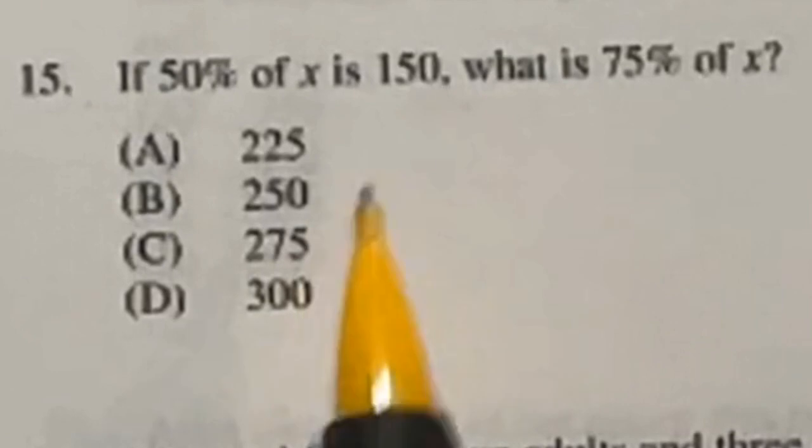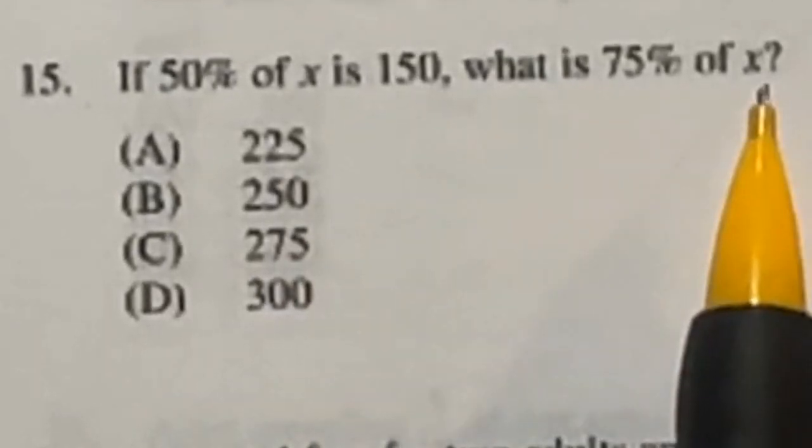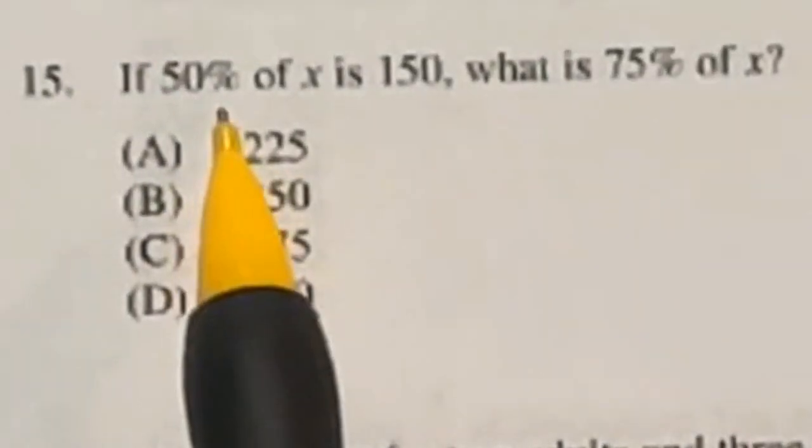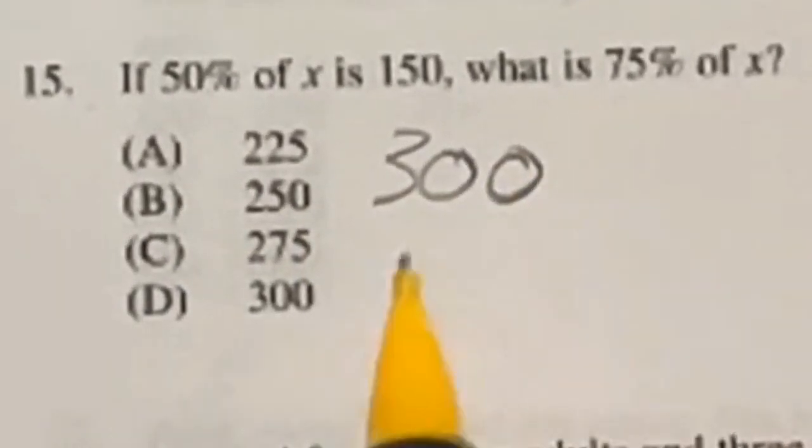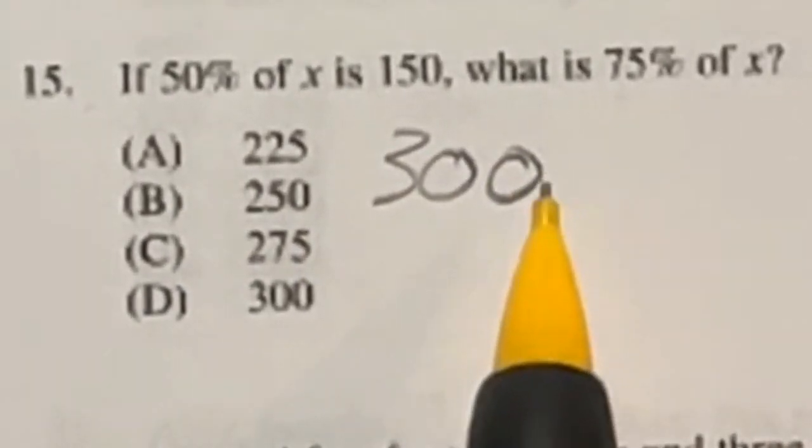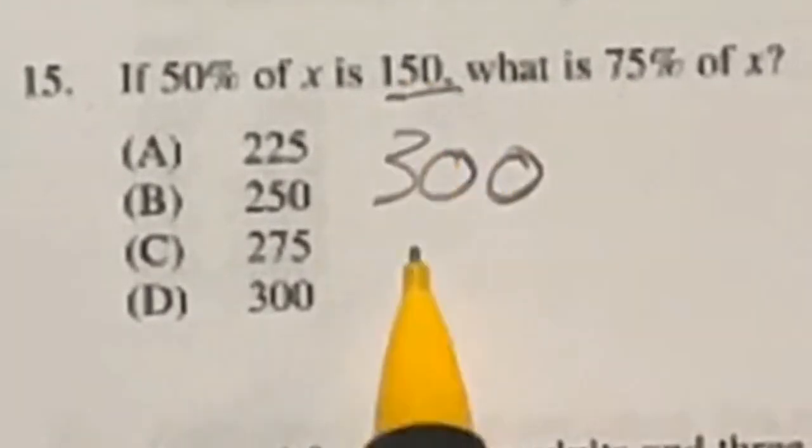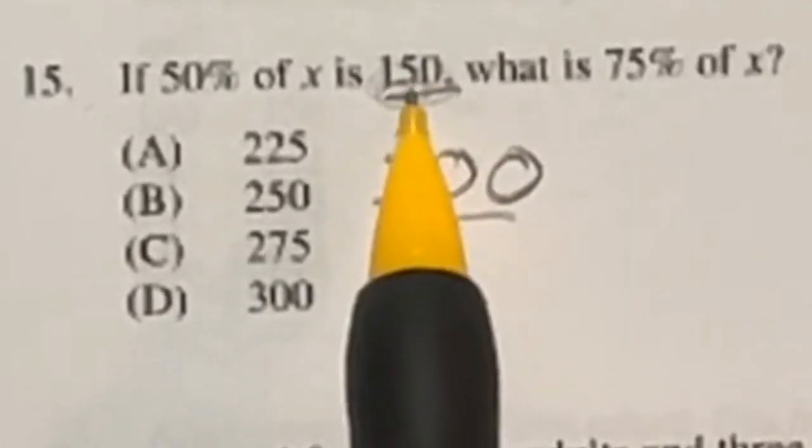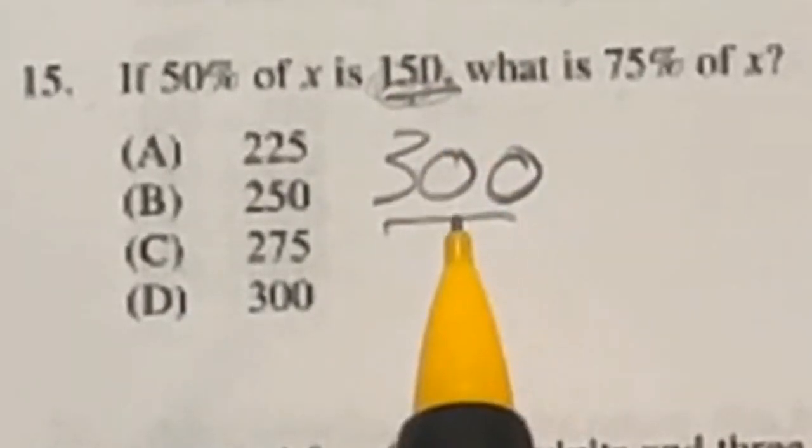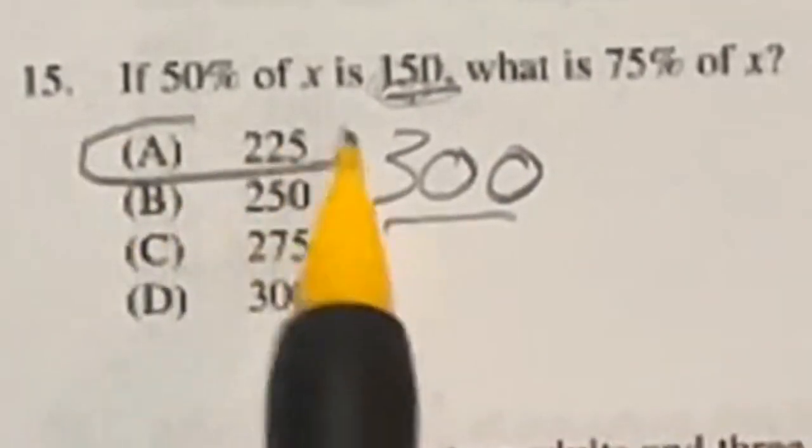50% of X is 150. What's 75% of X? Well, if 50% of a number is 150, then that number is 300. So what's 75% of 300? Well, that would be halfway between 150 and 300. That would be 75 above this guy, because that's splitting it in half. So 150 plus 75 is 225. Our answer here is A.